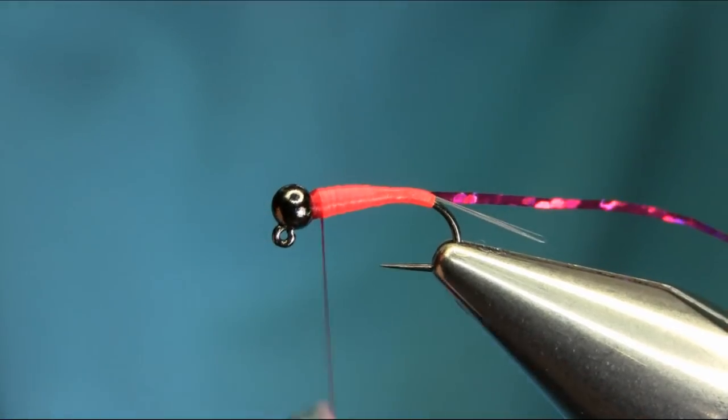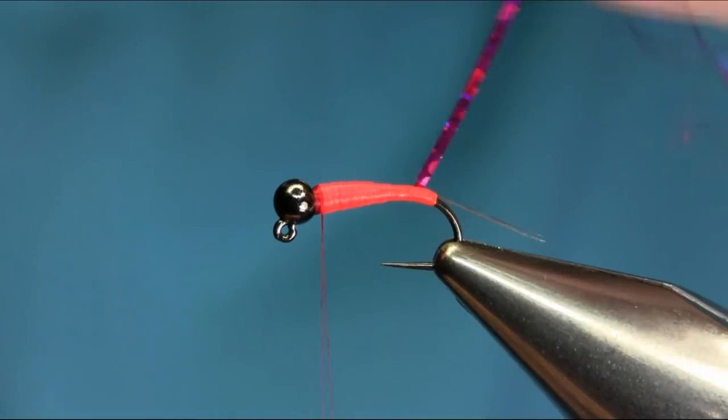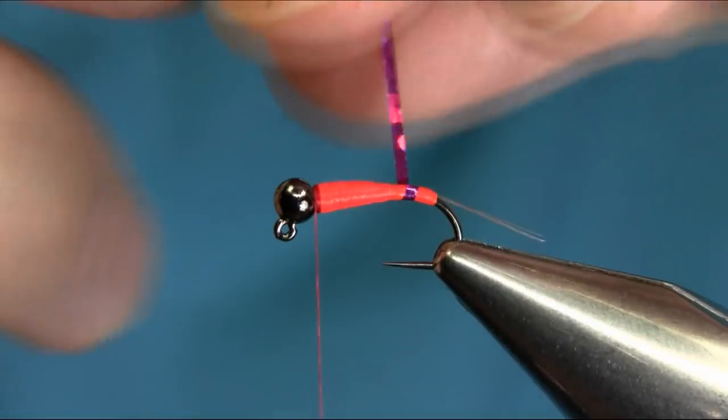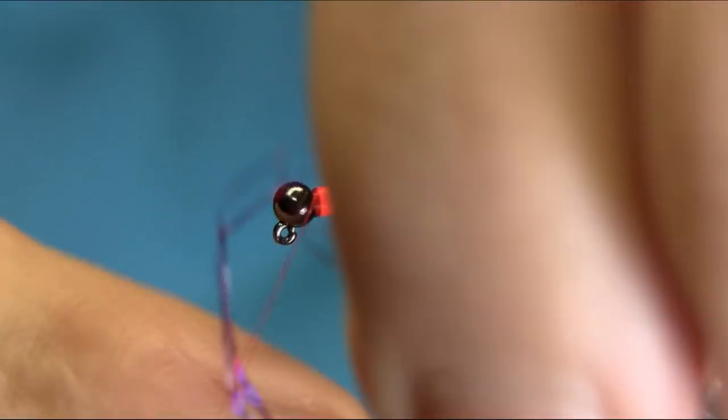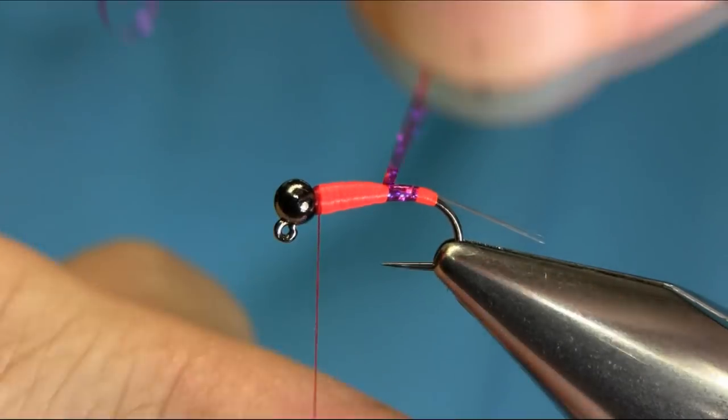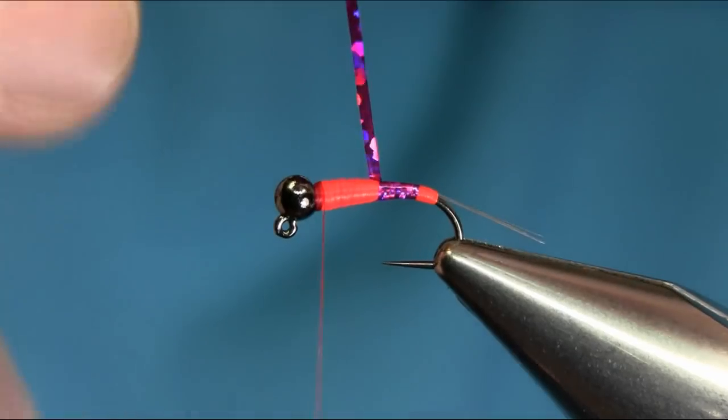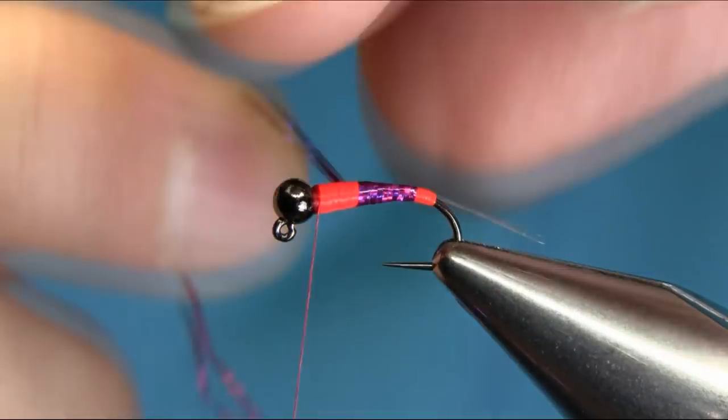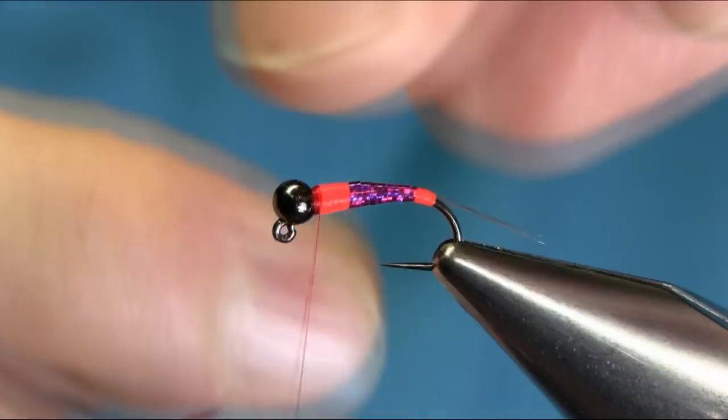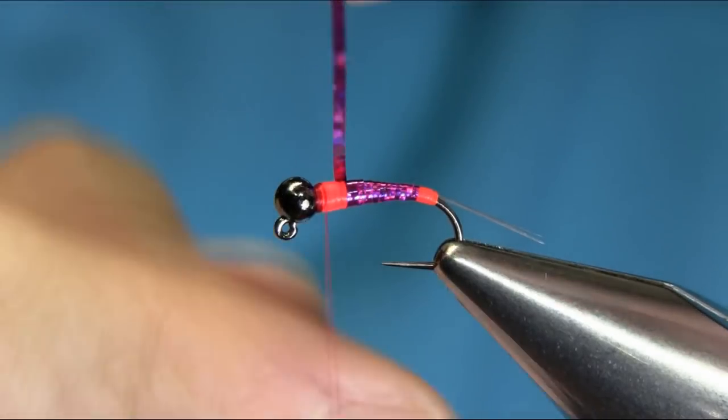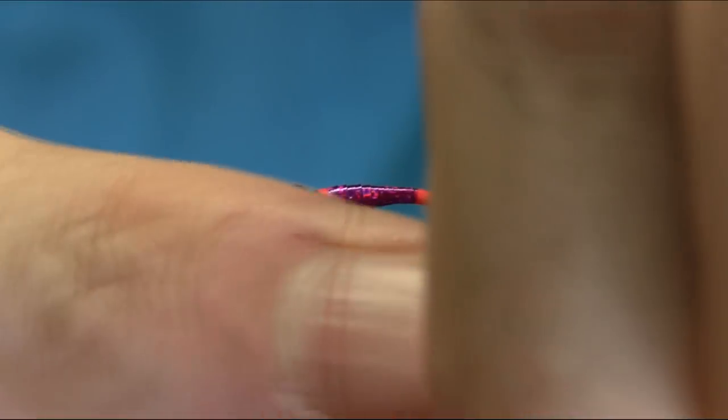Now bring this material, and remember to use each wrap on top of the previous wrap. That way it will create a little ribbing effect. This is a great color for grayling fishing. Purple is another good color, as well as pink.